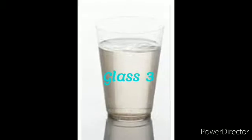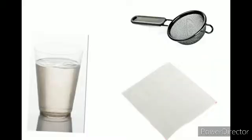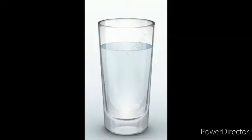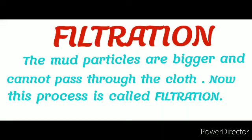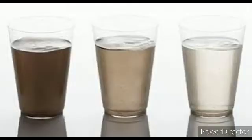Now take another glass and place a tea strainer over it and spread a piece of fine cotton cloth. Pour the water from the glass through it. What do you see? The soil particles remain on the cloth and the water in the glass looks transparent. This is because the mud particles are bigger and so cannot pass through the cloth. This process is called filtration. We have now seen some methods of making muddy water clean and transparent.